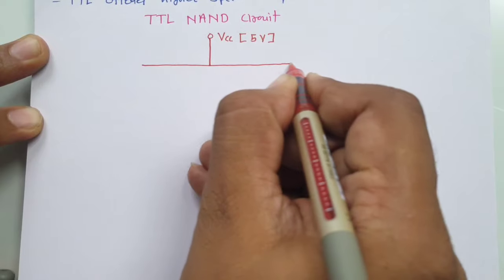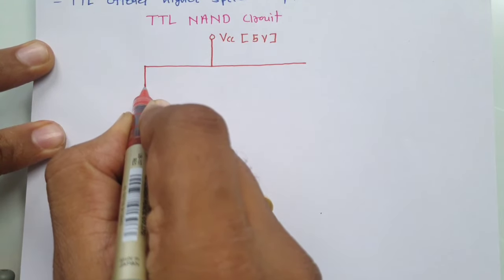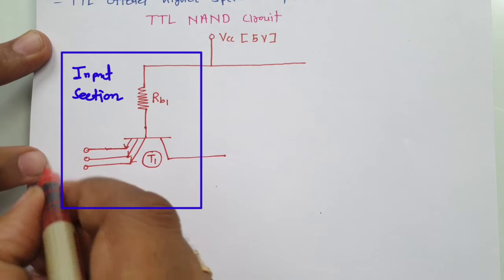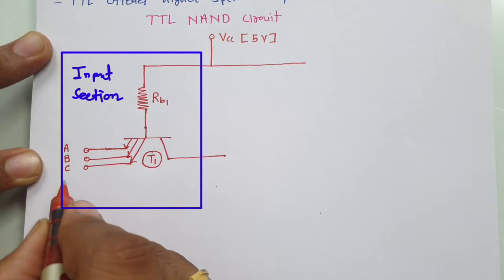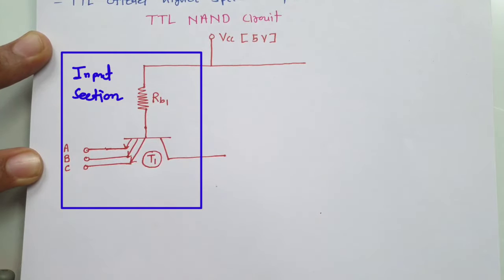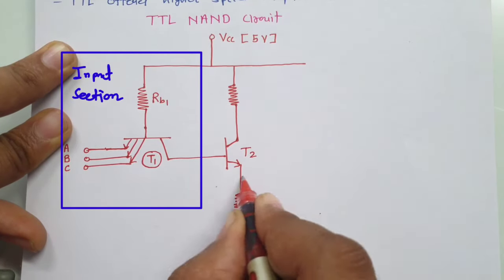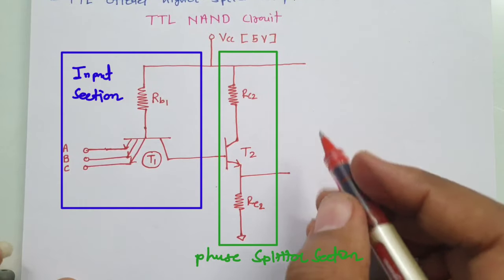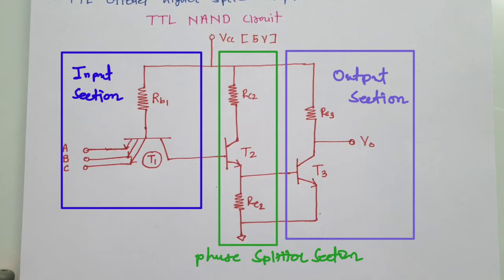The standard TTL circuit is subdivided into three different sections. The first is the input section, which contains a multi-emitter transistor where we give inputs. Here I have shown a 3-terminal emitter transistor with three inputs A, B, and C, and biasing resistance RB1. The second section is the phase splitter section. The third section is the output section, where we take our output V0. That is how we have three sections in the TTL NAND gate circuit using standard TTL.